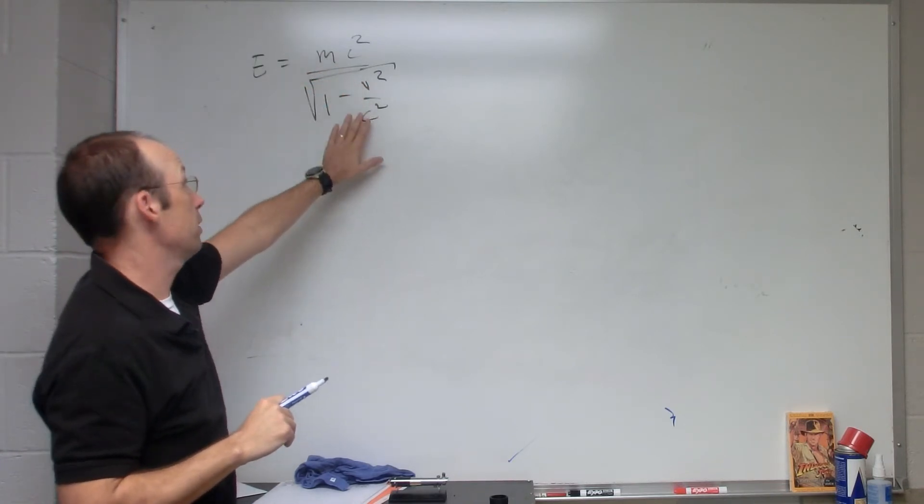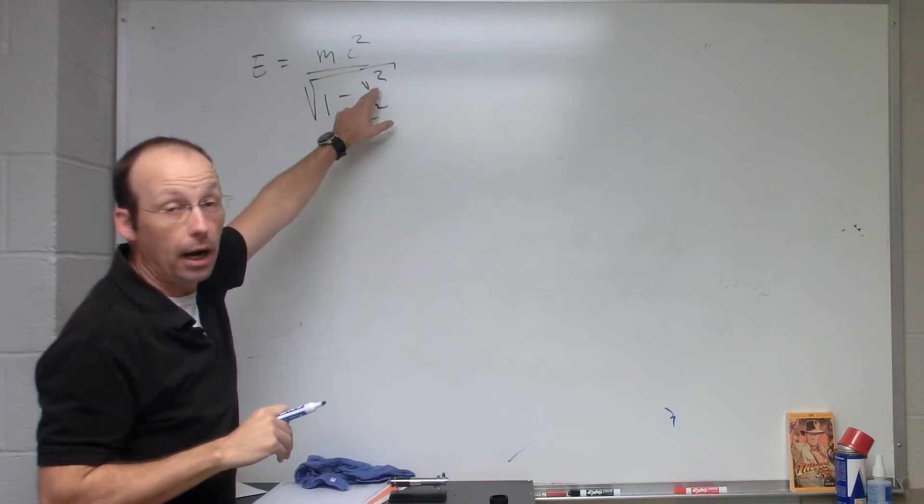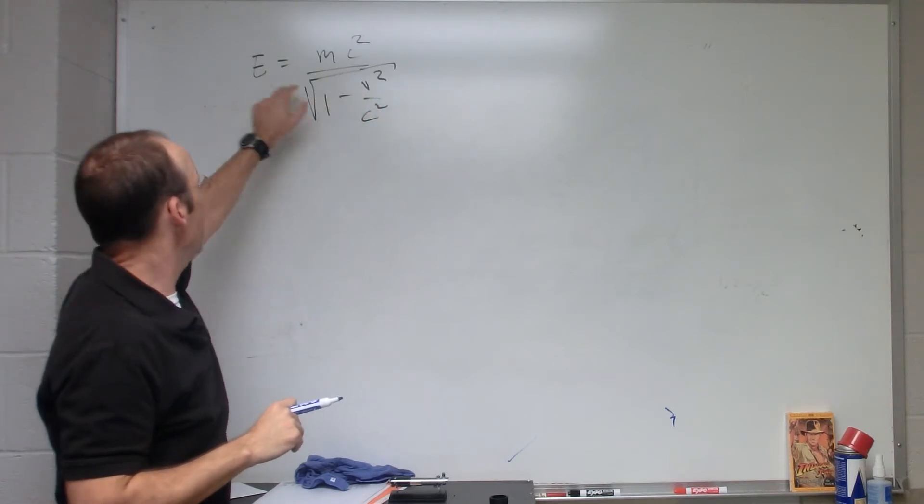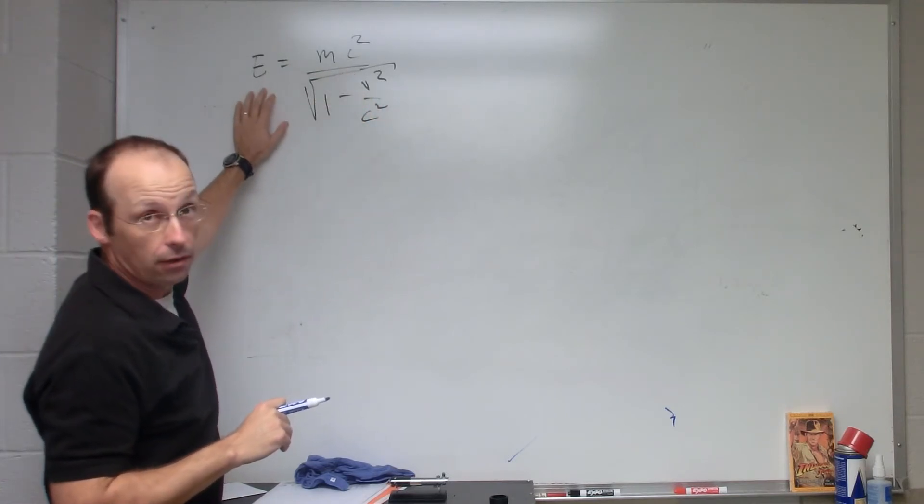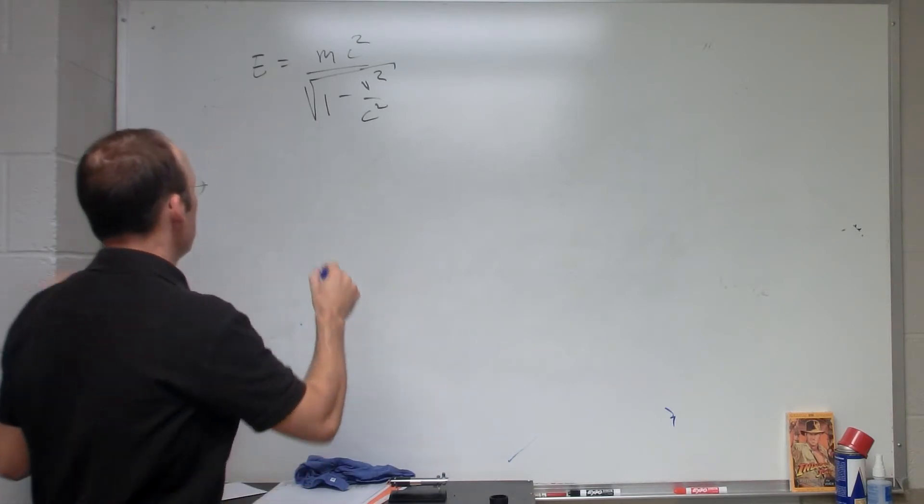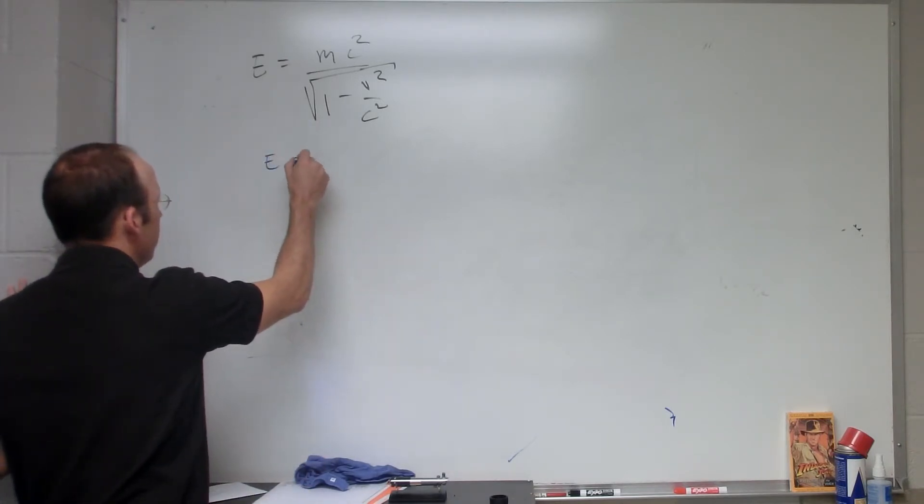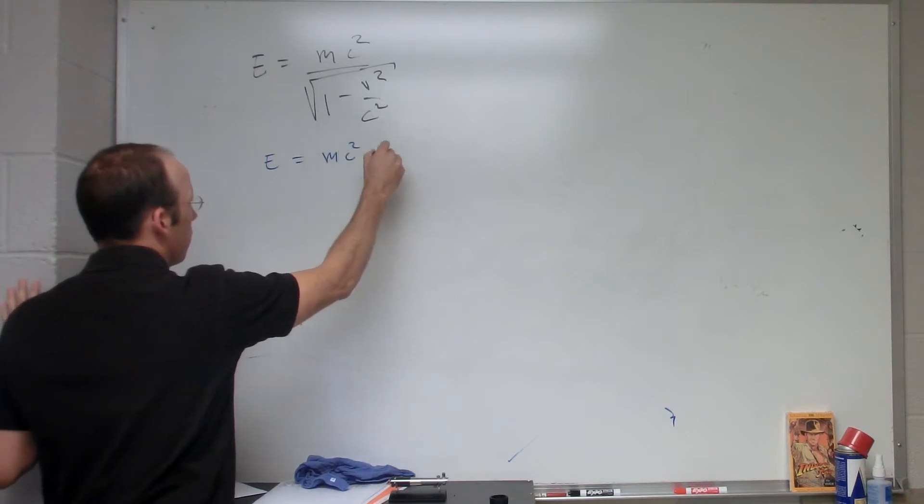And the second important thing is this is a scalar, it's not a vector, it doesn't show the direction. So we can also write this as E equals mc squared plus K where K is kinetic energy.